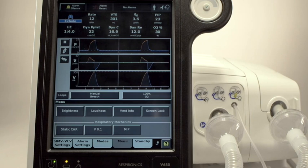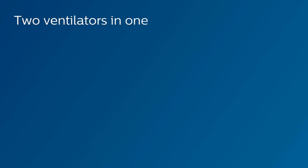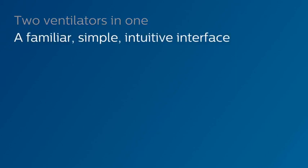Now, let's recap the unique features and benefits of the Philips Respironics V680 Ventilator. Two ventilators in one. A single-limb non-invasive ventilator similar to the V60 with digital AutoTrack Plus. And a dual-limb critical care ventilator with state-of-the-art dynamic respiratory mechanics. A familiar, simple, intuitive interface. If you can operate V60, you should be able to operate V680.